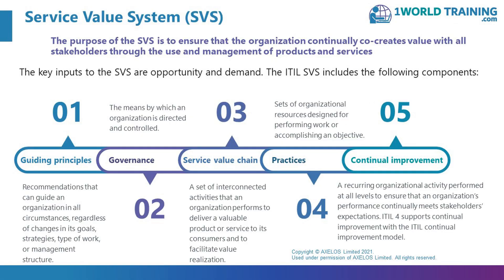The key inputs to the Service Value System are opportunity and demand. Demand is when a customer or a user says they want something — a user might phone and say they have an incident, or a customer might speak to their account manager and say they need a new service. Opportunity might be that your organization has recognized a new market they want to get into, or that somebody has recognized an improvement opportunity that could make your services work better.